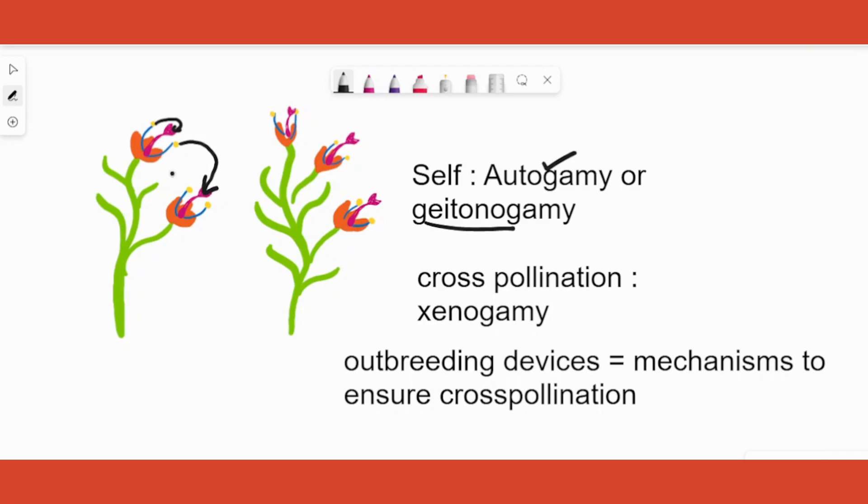Instead of pollinating the same flower on the same plant, let's say the pollen grains flew far away or some agent like a bee came and took away this pollen and transferred it to another plant's flower of the same species. That means that it is cross pollination, otherwise called as xenogamy.